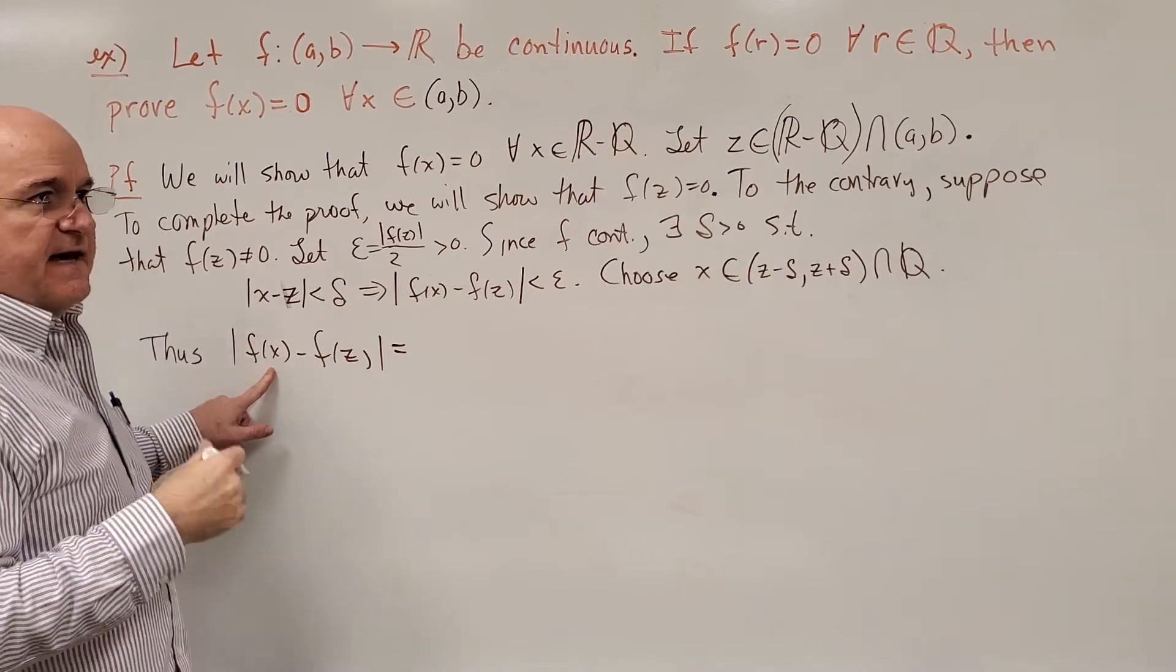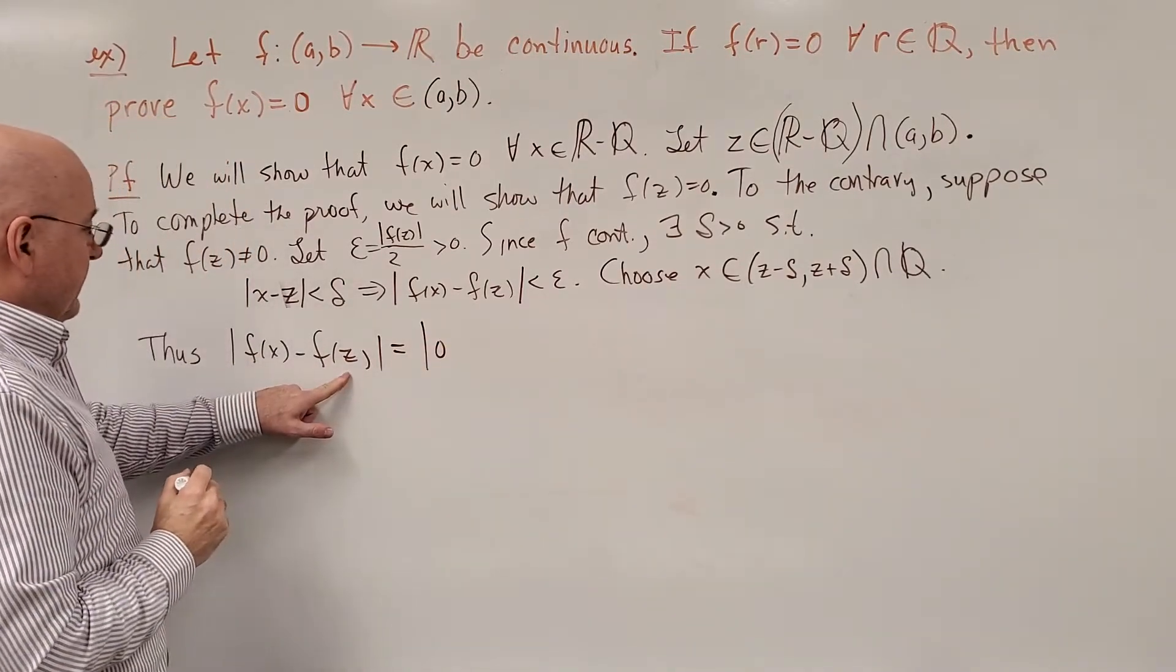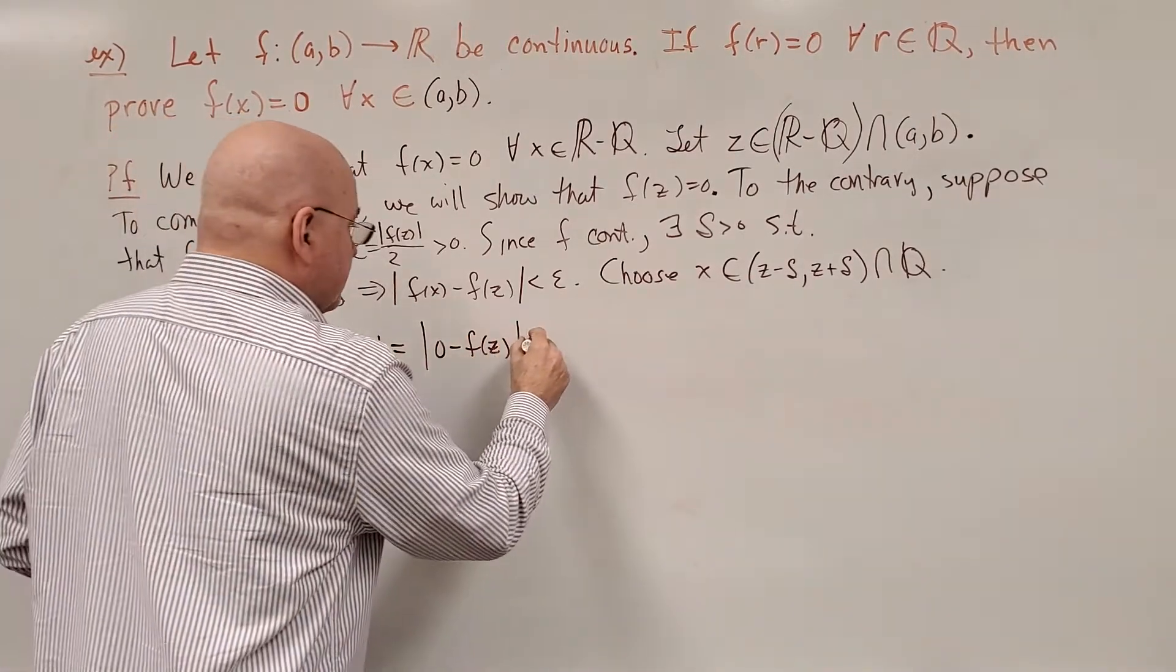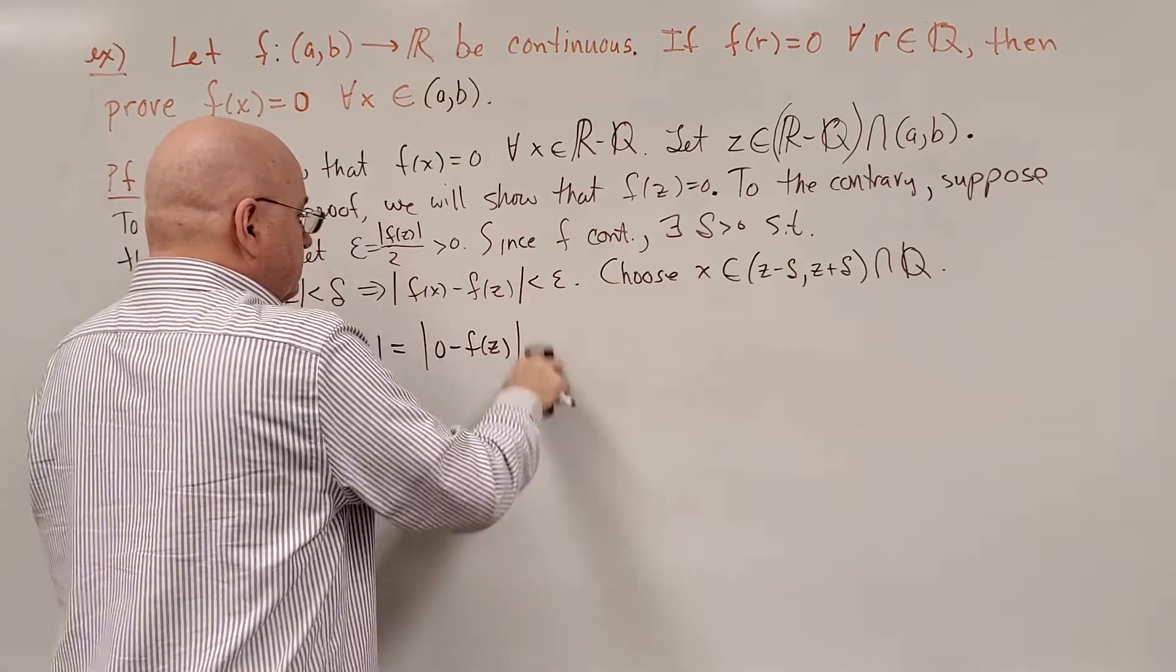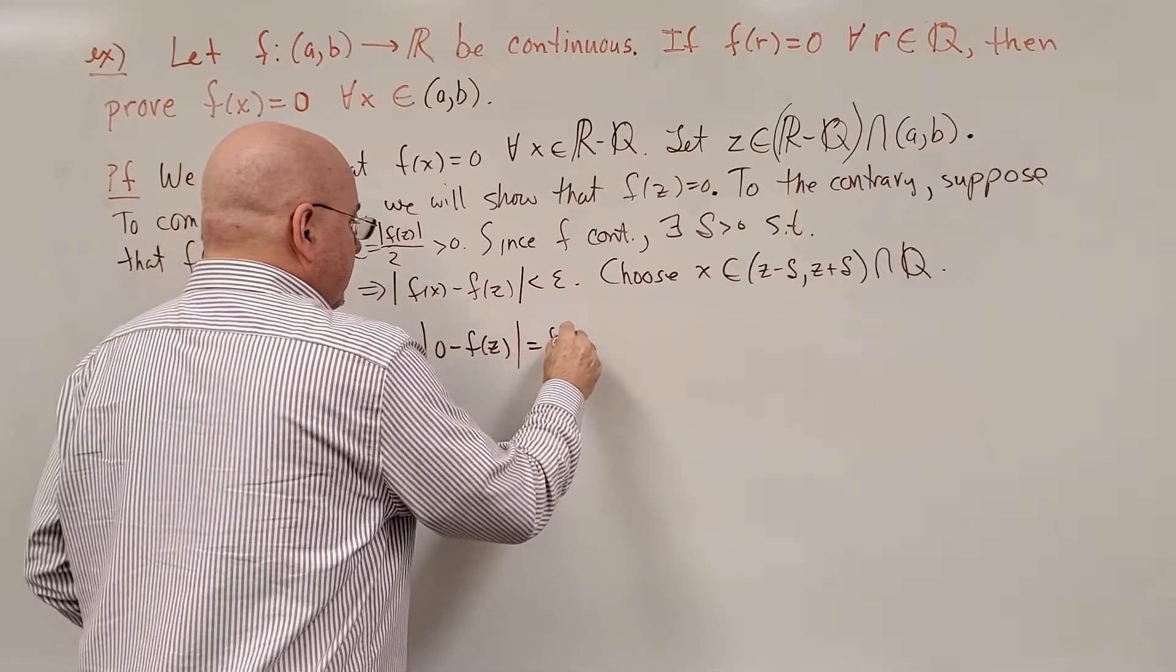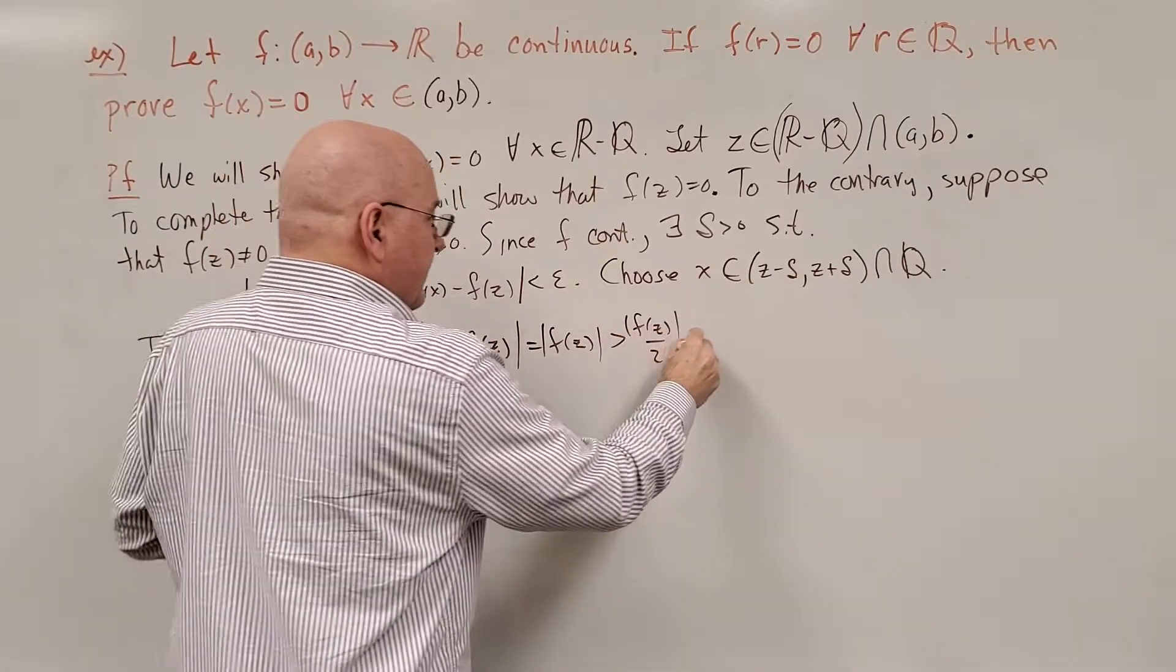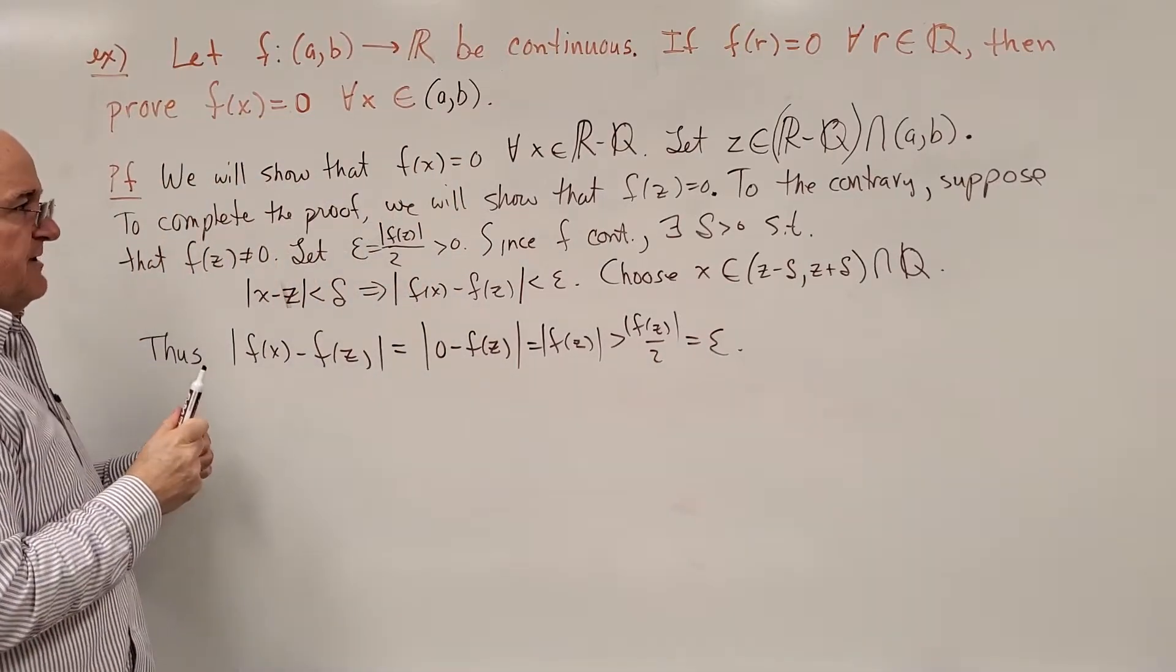f(x) is f of a rational which is 0, minus f(z) which is definitely not 0. That's greater than, actually it's equal to |f(z)| which is greater than |f(z)|/2 which is our epsilon. So, that's where we reach our contradiction.